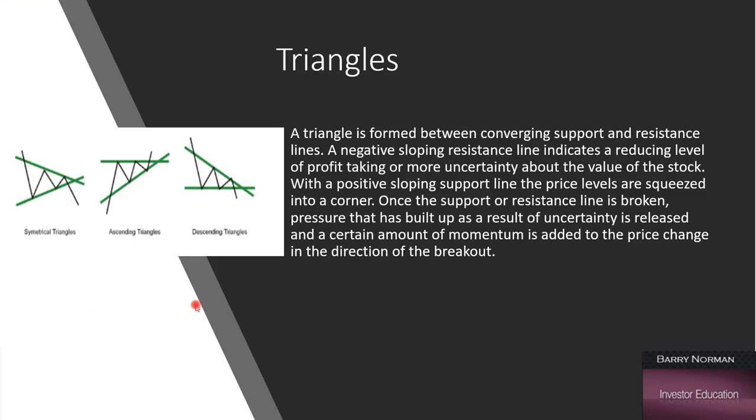Like I said, the most popular, well-known is triangles. A triangle is formed between converging support and resistance lines. A negative sloping resistance line indicates resisting level of profit taking and more uncertainty about the value of an asset. Basically, what we have is we have price being pushed into the apex of this formation. And we know at some given point, price is going to have to break out of that formation.